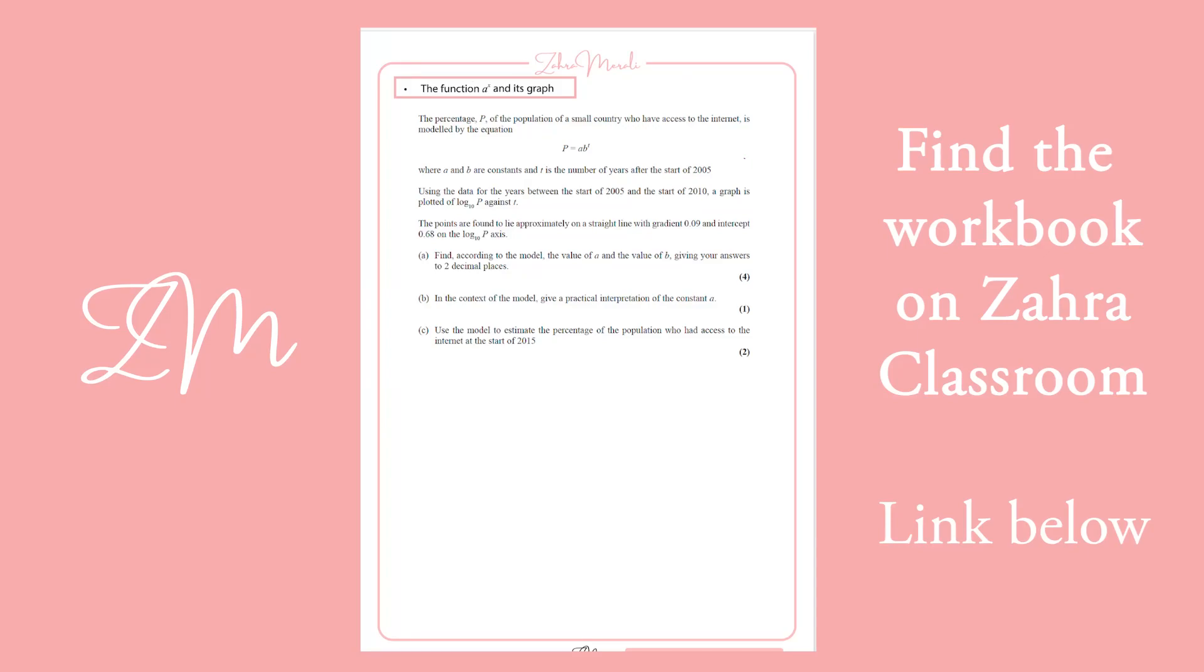So this section of the AS, which you would have done at the end of AS, is the bit that's tested the most when you get to these exams. We've got a graph P equals AB to the T, and we've been told a straight line's been drawn of log base 10 P against T.